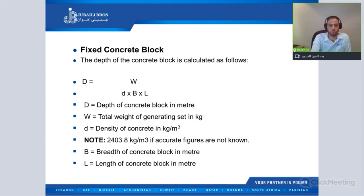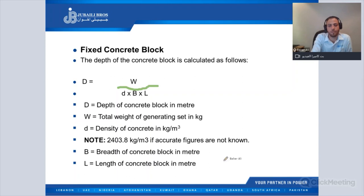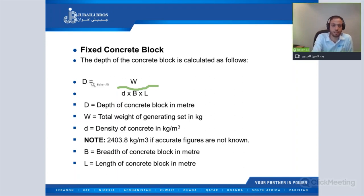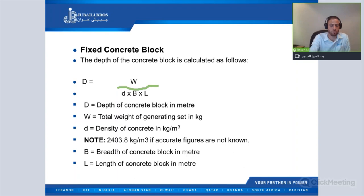The depth of the concrete foundation is calculated as: D = W / (d × B × L), where D is the depth in meters, W is the total weight of the generator set including engine, alternator, and base frame, d is the density of the concrete in kg/m³, B is the width of the concrete plot, and L is the length, both in meters. If you don't have an accurate figure for concrete density, you can use 2,400 kg/m³.